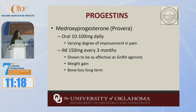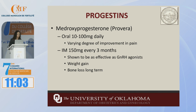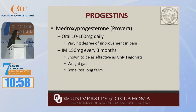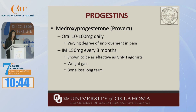Another progestin is medroxyprogesterone, or Provera. There are oral forms, but in research and clinical practice there's a varying degree of improvement in pain. However, the IM form — Depo-Provera — has shown to be really effective, comparable to GnRH agonists. This is a shot patients have to come into the clinic to get every three months. Weight gain is a problem, and long-term they can have bone loss.